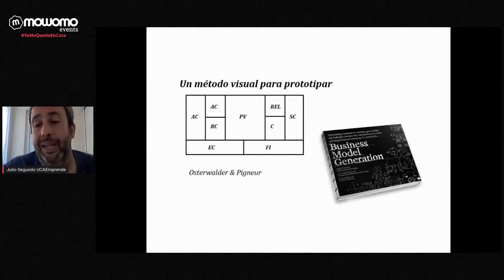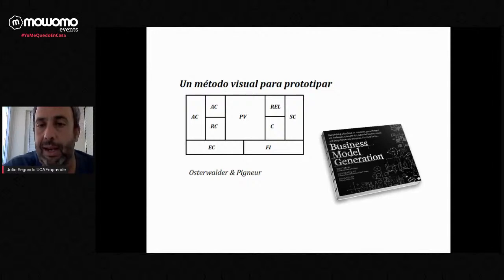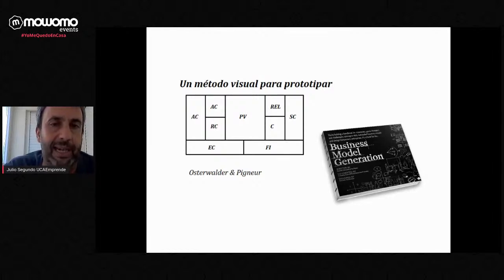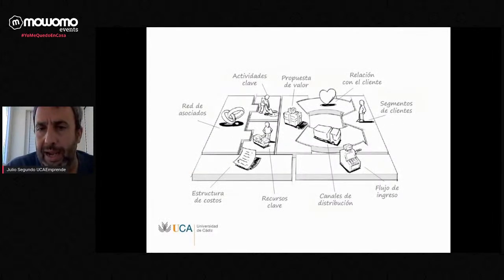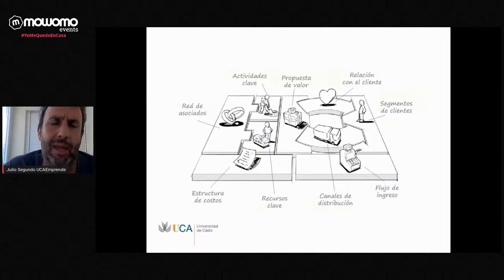El Business Model Canvas nace de una tesis doctoral de Alexander Osterwalder en el año 2004 y rápidamente vuela en el mundo del emprendimiento, convirtiéndose en una herramienta estratégica para pensar en un modelo de negocio. Son nueve cajas, y hay un montón de variantes del Canvas original: el Lean Canvas, el Mission Canvas, el Social Canvas. Me da exactamente igual cuál utilicéis. Lo importante es que tengáis claro cuál es vuestro modelo de negocio.